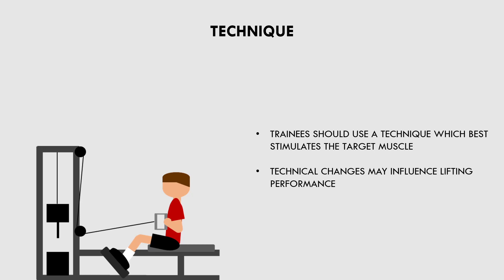For example, we may reduce the load for a seated cable row and really focus on performing the movement with strict and effective technique to hit the mid-back. On paper this looks like we have decreased our performance, but in reality we are actually getting a better stimulus to the back muscles.